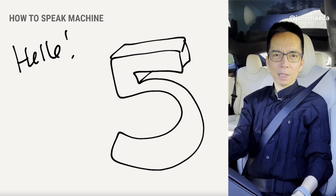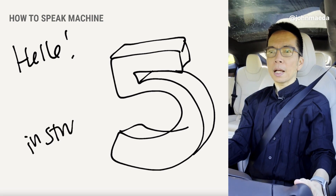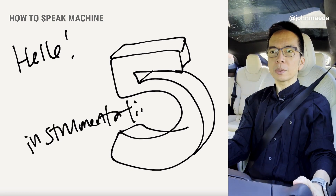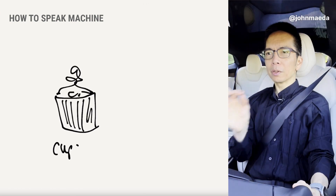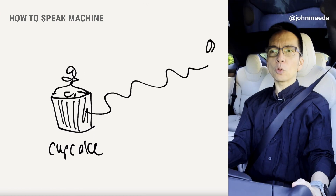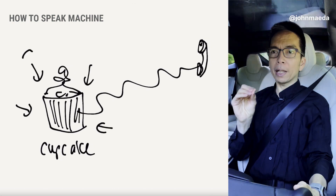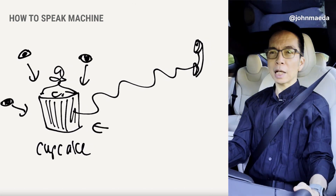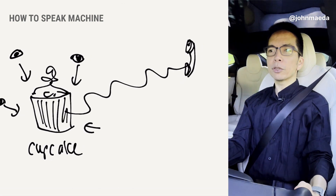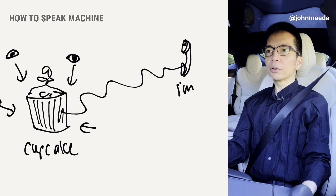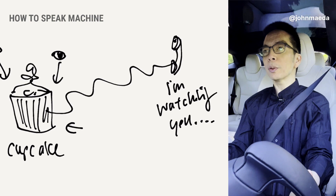Chapter 5 of How to Speak Machine is about how computational systems can be instrumented — meaning that you can connect a wire to the active cupcake. Remember that incomplete chapter 4? That little sample you've given to someone out there — you can attach a wire to it and understand what the user is doing.